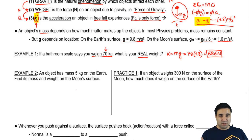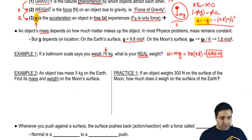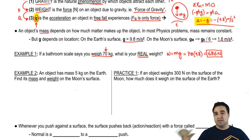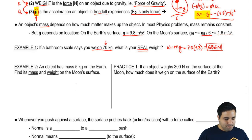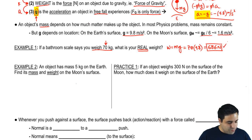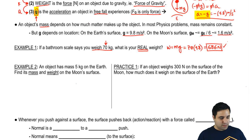Nobody talks about their mass — they talk about weight. But they're actually using mass. When you say your weight is 110 pounds, that's actually your mass. Your real weight requires multiplying by gravity.